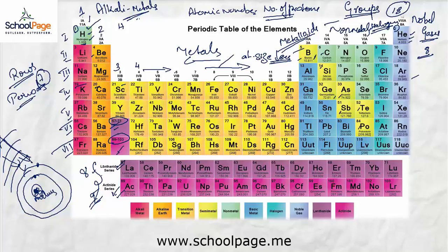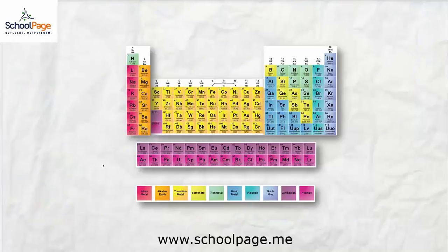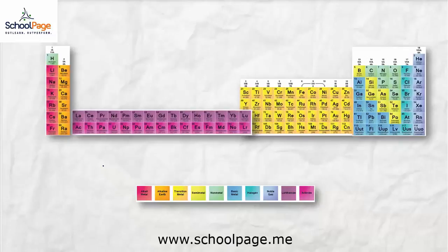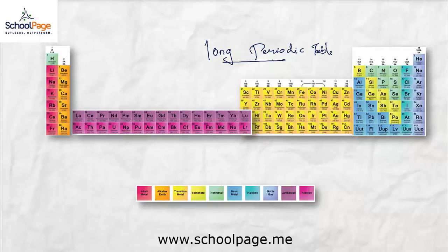Let's observe how the periodic table looks if we insert these two rows into the original periodic table. Now here it is — the periodic table becomes a very long periodic table. And because of this reason, the modern periodic table is also called the long form periodic table.